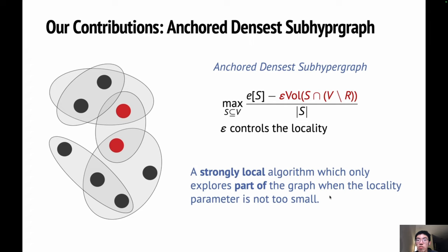We propose exact algorithms for this objective. Further, we design a strongly local algorithm for this objective when epsilon is not too small. Strong locality means we only need to explore part of the hypergraph, which is a super useful property when a hypergraph is massive.